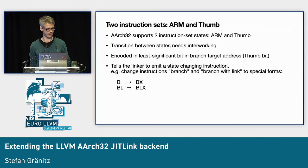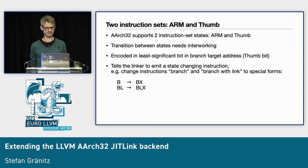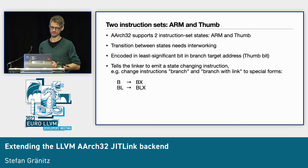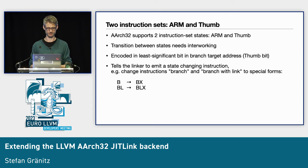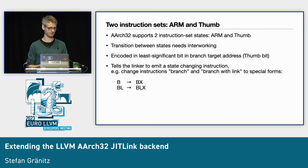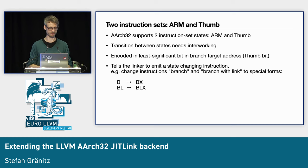Let's go to the architecture and considerations in the initial patch. ARCH32 has two instruction set states: ARM and Thumb. In order to transition between these states, we need interworking — we need to tell the processor that we are changing the instruction set. This is typically encoded in the last bit of a branch target address, called the Thumb bit. It tells the linker to emit a state-changing instruction — instead of a branch B instruction, we may emit a BX instruction, or instead of a branch-with-link BL, we may emit a BLX instruction.